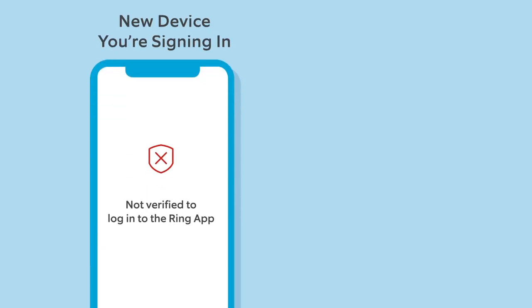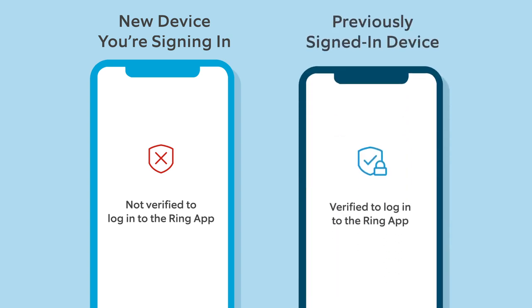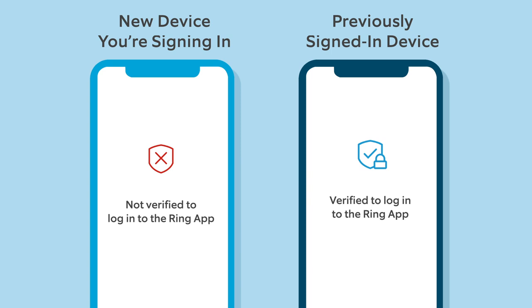As an account security measure, when you attempt to sign into a Ring account from a new device or browser you've never used before, you'll be asked to manually generate your one-time password with a device or browser that's been previously used to sign into that account. Here's how this works.